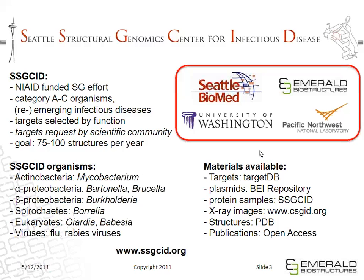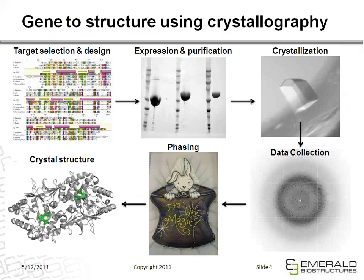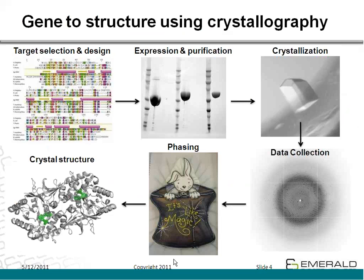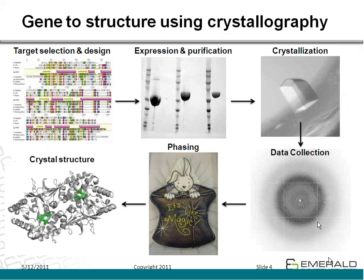Like everyone else in crystallography, we go through the standard series of steps: target selection, construct design, cloning, expression and purification, crystallization, data collection, phasing, and then our crystal structures as output. For people outside of the field of crystallography, this phasing step appears to be something like magic. Of course, it's not magic — it's math.